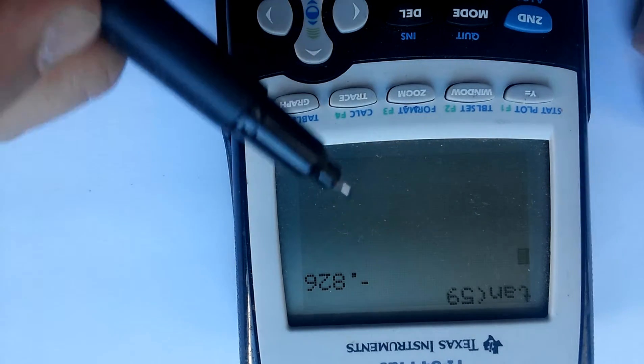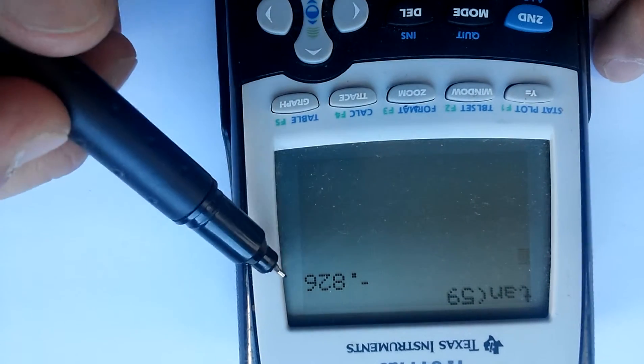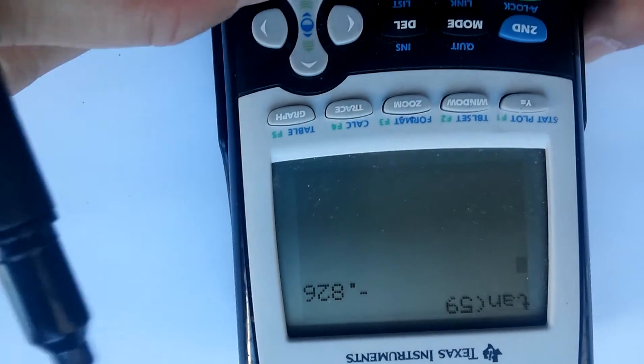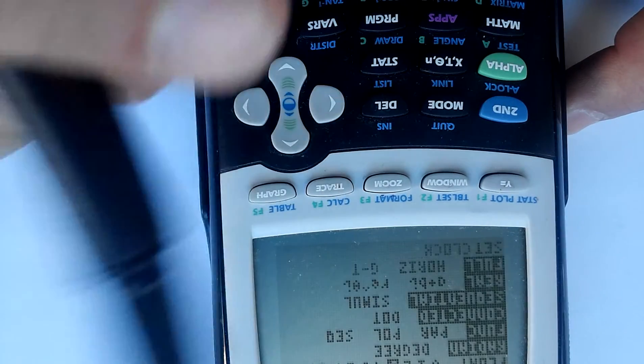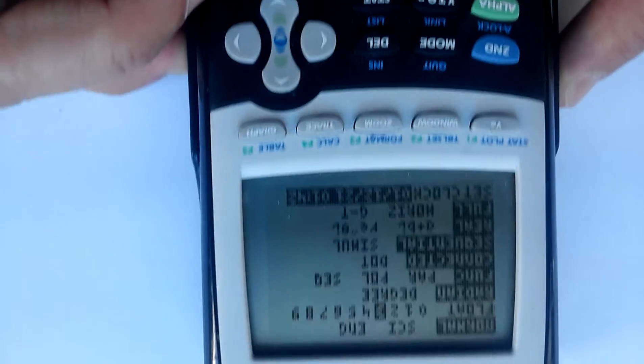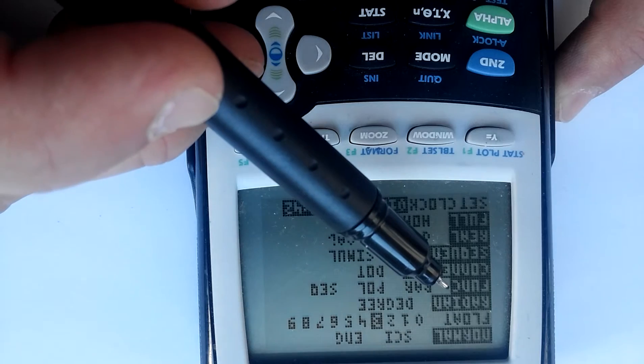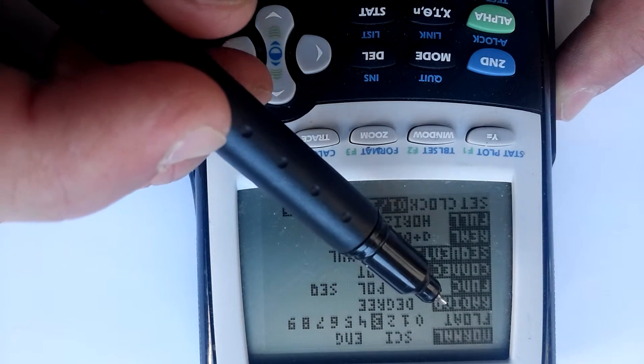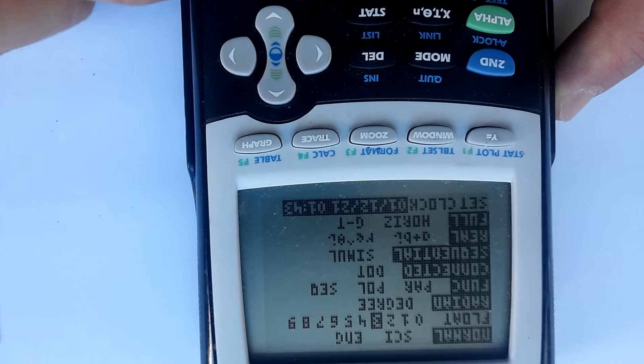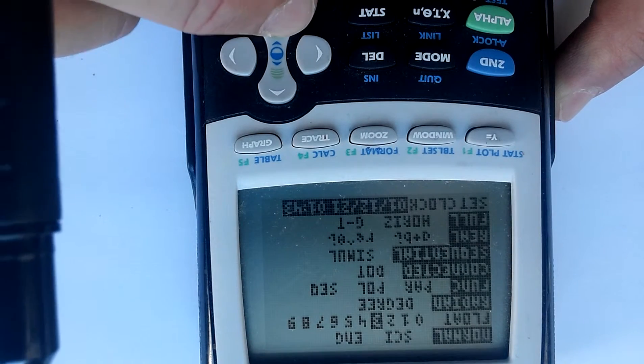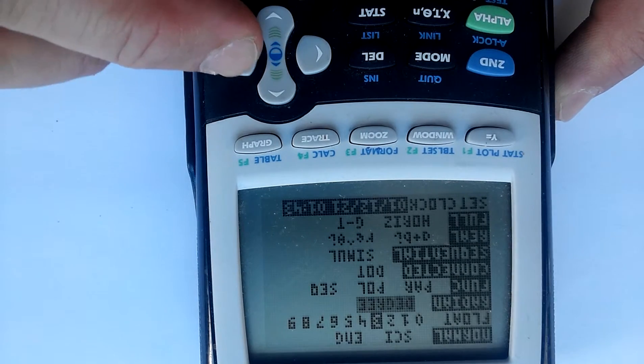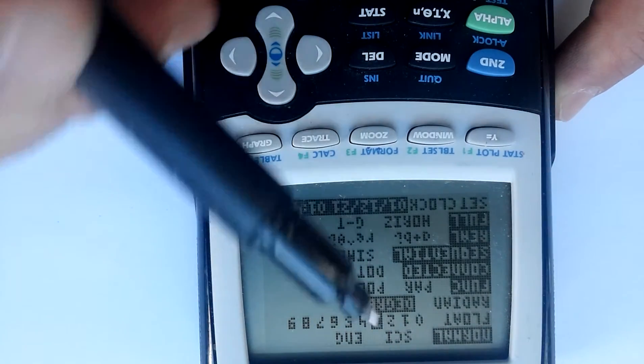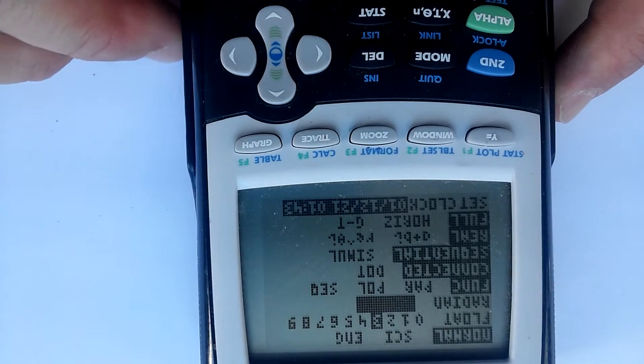That will actually happen sometimes. You'll notice it says minus 0.826. That's wrong because, let me show you - hit the mode button. You'll notice it's highlighted on radians. You don't want that. Go ahead and click over, and you want it to be on the setting where it says degrees.